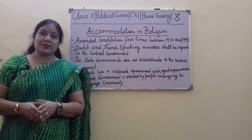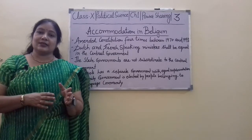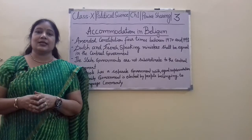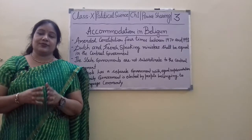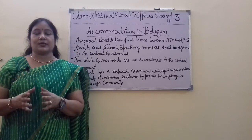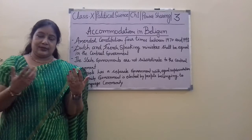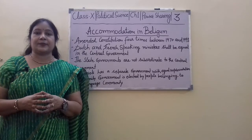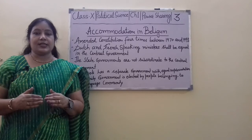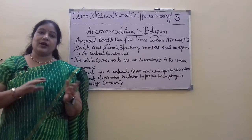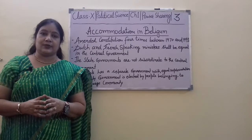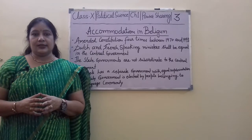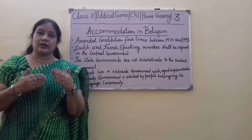You must remember we discussed the complex ethnic diversity in Belgium, where French language, Dutch language, and German language people stay in different regions. But if we look at Belgium's capital, there is an opposite combination. So, in such scenarios, what measures were taken by the Belgian government to accommodate that diversity?